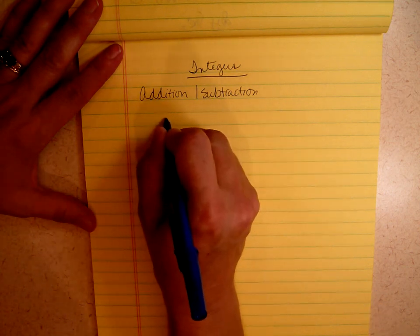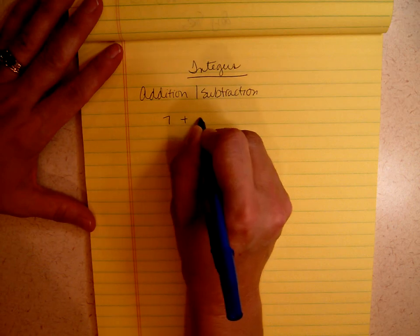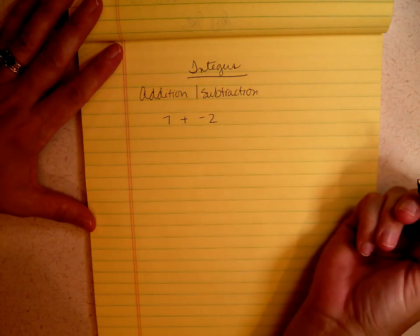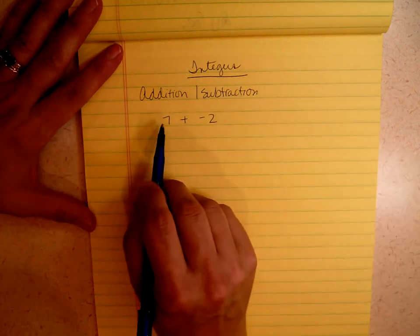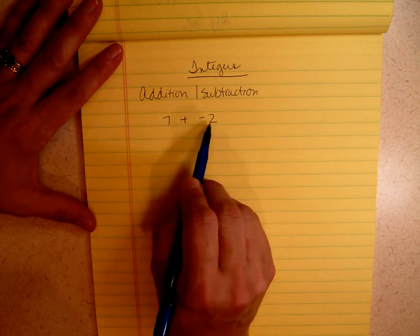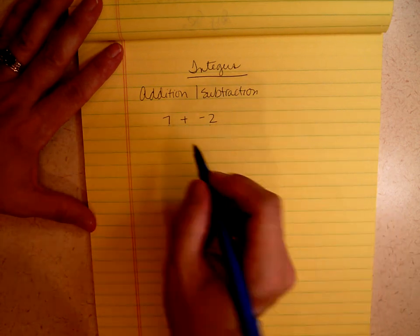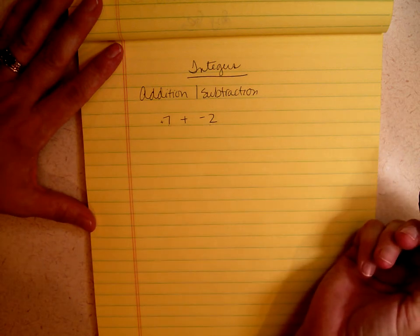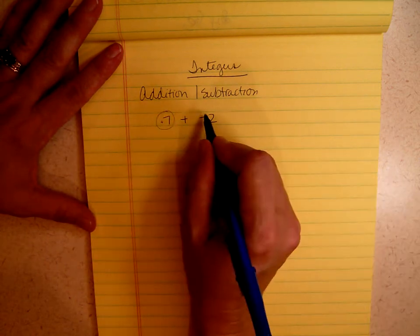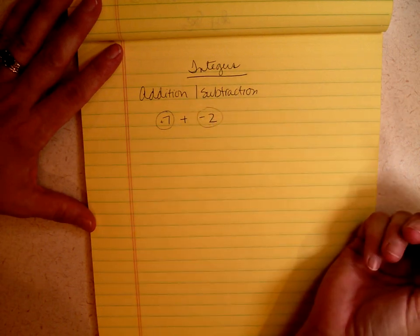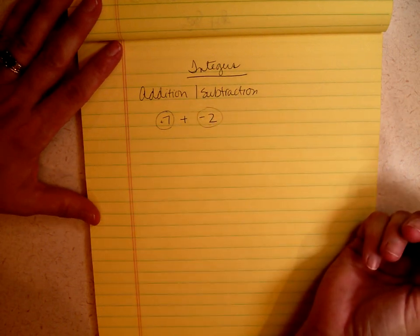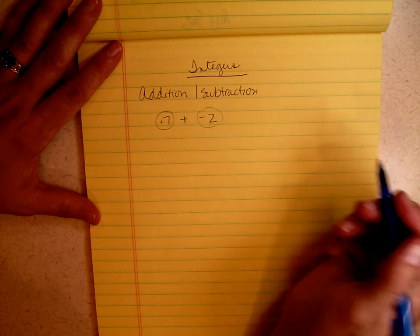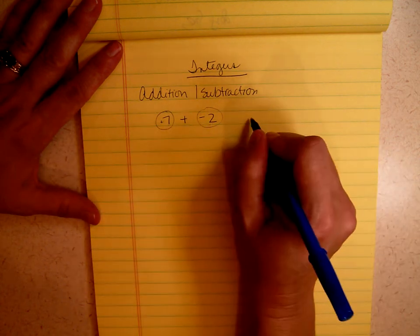Let's say I had the problem 7 plus negative 2. Remember, the sign stays with the number. The first thing you want to look at is: do these have the same signs? Well, there's an invisible plus sign in front of that 7 — it's not showing, but it's actually there. So this is a positive number and this is a negative number. Are the signs the same? No. If the signs are different, you always subtract. So 7 minus 2 is 5.